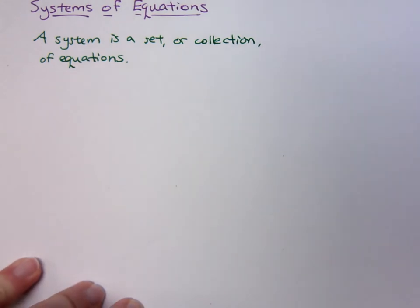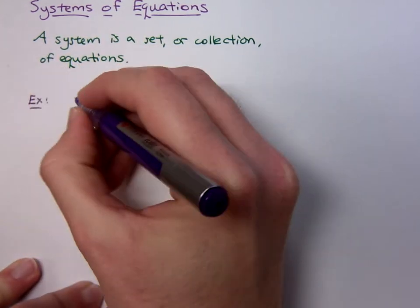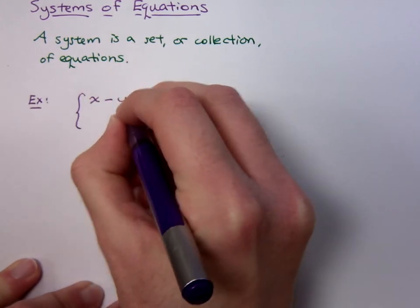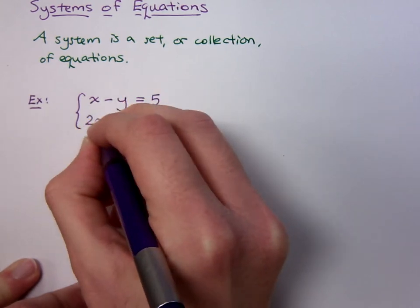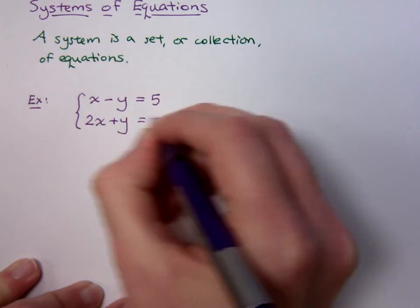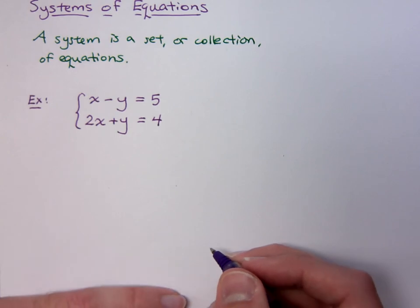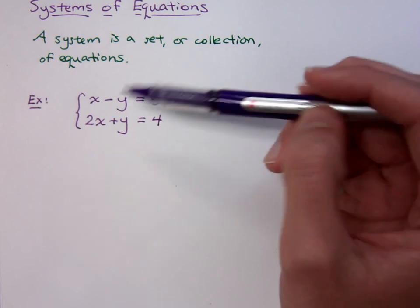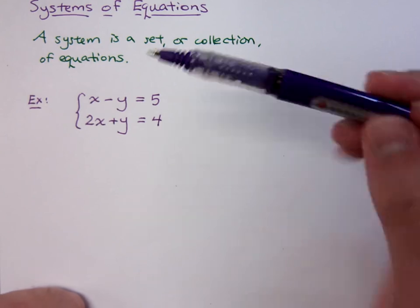Let's give an example of what a system looks like. An example of a system could be something like this: x minus y equals 5, and 2x plus y equals 4. This is an example of a system of equations. You have two different equations, and we use this curly bracket here to indicate that this is a set or a system.